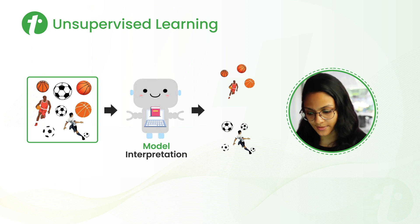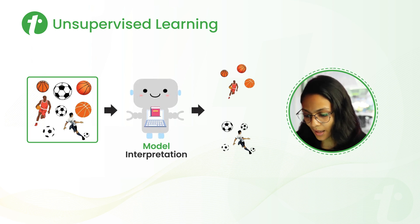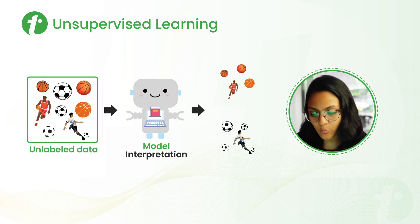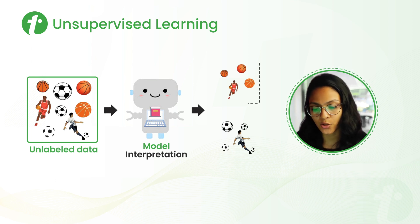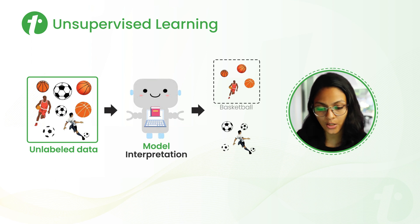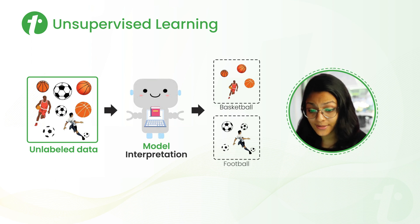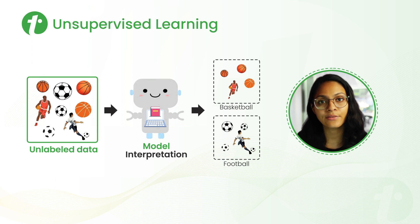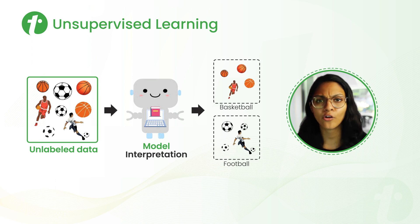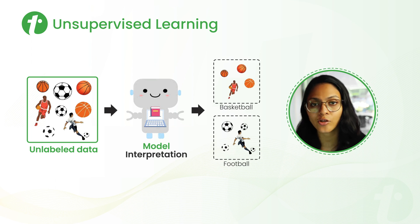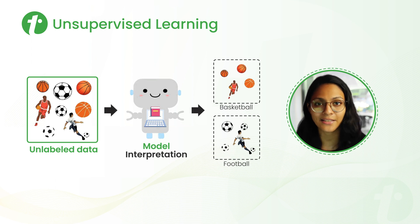Let's understand this with an example. Let's say this little guy is our model, and we are providing some unlabeled data to this model. The model is interpreting and dividing that into two groups — a group of basketball and a group of football. For this classification, it may use some similarities or dissimilarities like the color of the ball, the pattern of the line on the ball, or whether it is played by the foot or the hand.